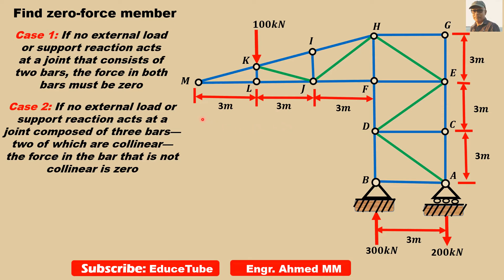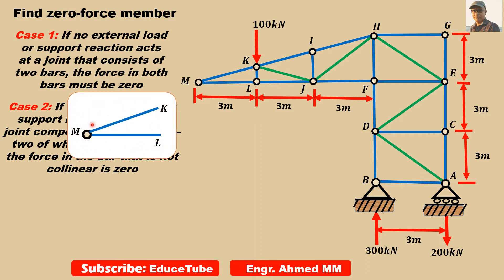I am taking first this joint M. At this joint, we can see two members, MK and ML. If we read this Case 1, it says if no external load or support reaction acts at a joint that consists of two bars, the force in both bars must be zero.